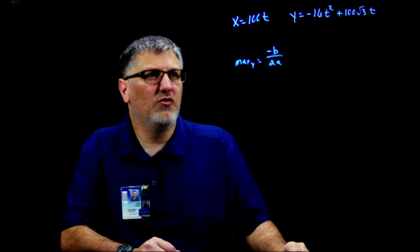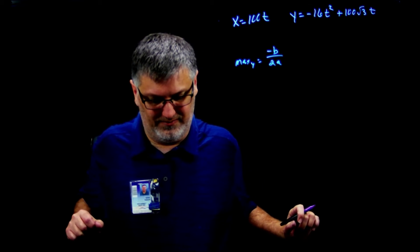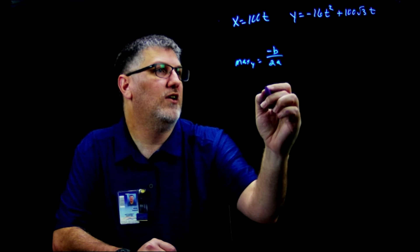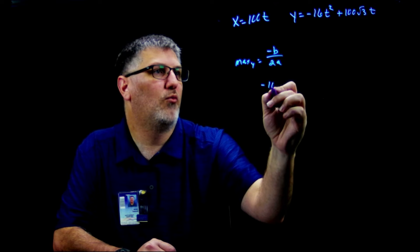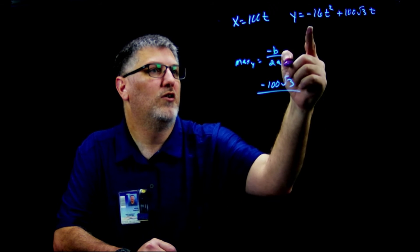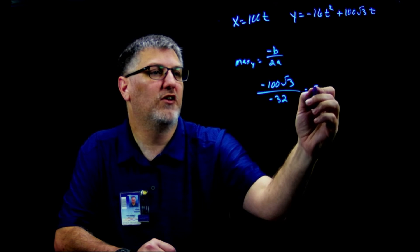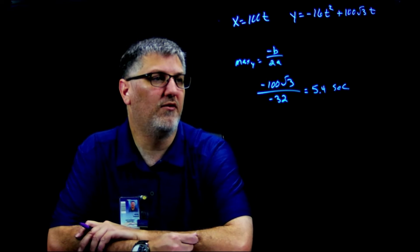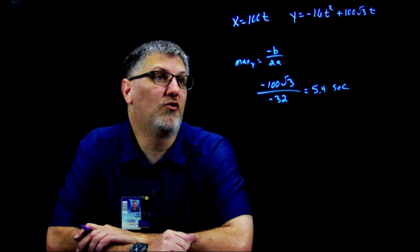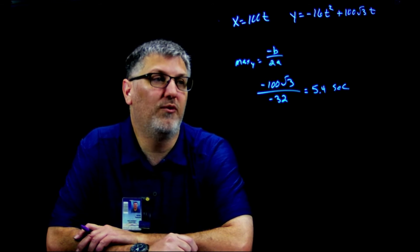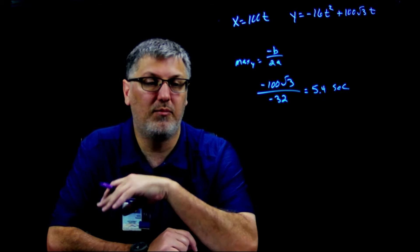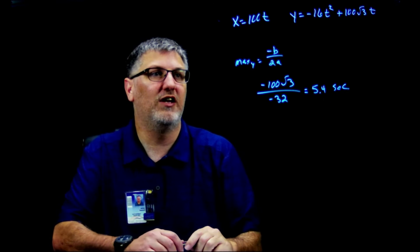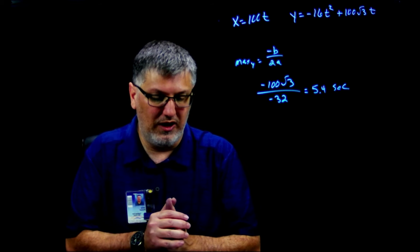I want to get -100√3 over 2a, well this is going to be -32, and this gives me 5.4 seconds. That's the time when you reach the maximum height, or you could have just taken your time and divided it by 2. This equation is derived by taking the derivative and setting it equal to 0.